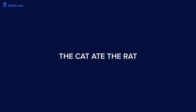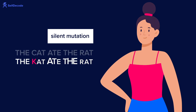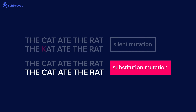For example, think of a sentence: 'The cat ate the rat.' With a silent mutation, the change doesn't have an effect. While this is an unusual sentence, the meaning is still correct. Humans can also have changes to genes that are unusual but do not cause any fundamental problems.